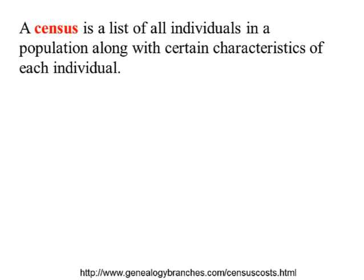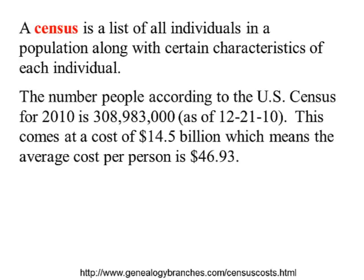A census is a list of all individuals in a population along with certain characteristics of each individual. The United States does a census every 10 years to count how many people live here. According to the 2010 U.S. Census, the population was almost 309 million people, at a cost of $14.5 billion, or about $47 per person.